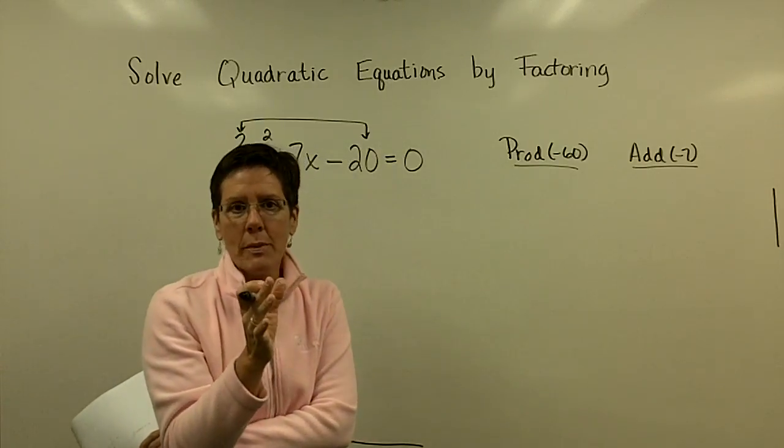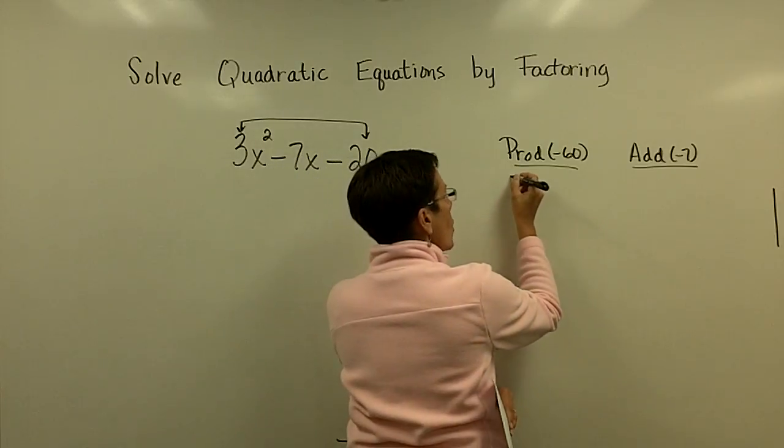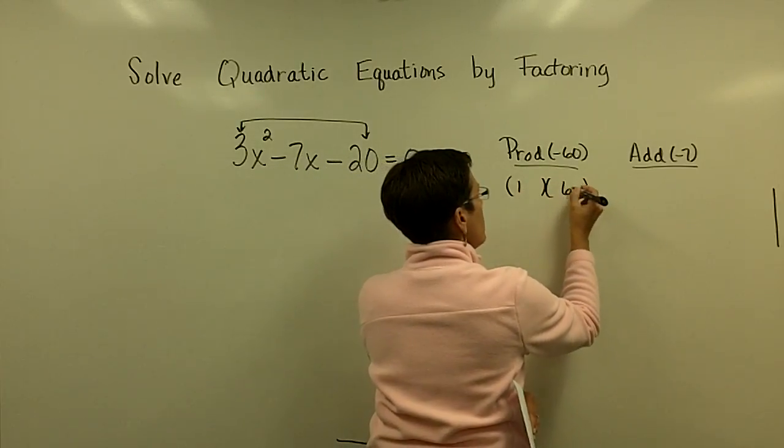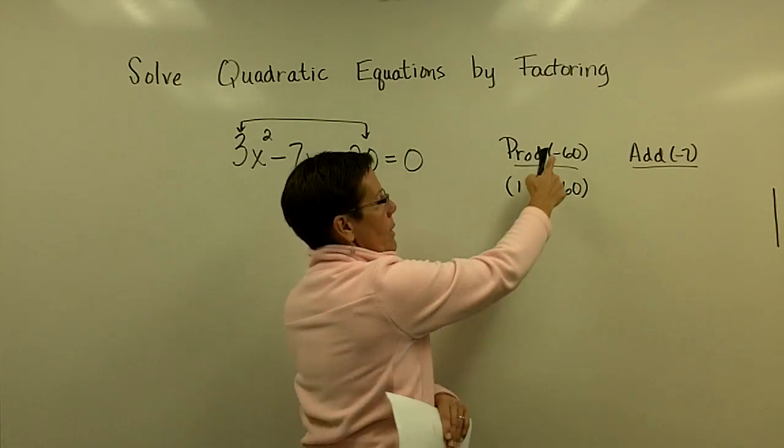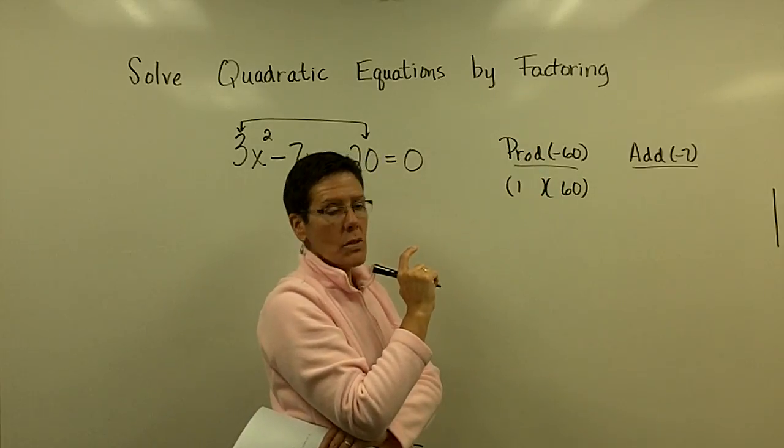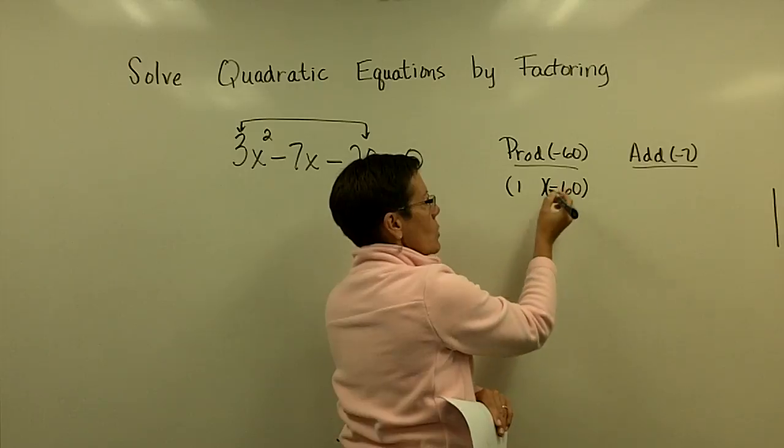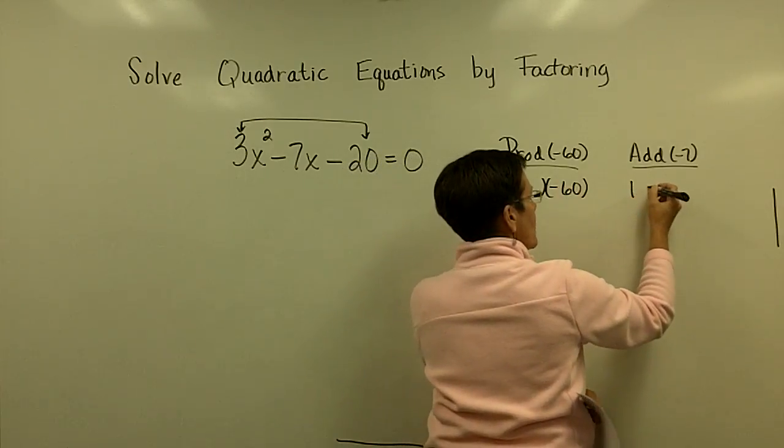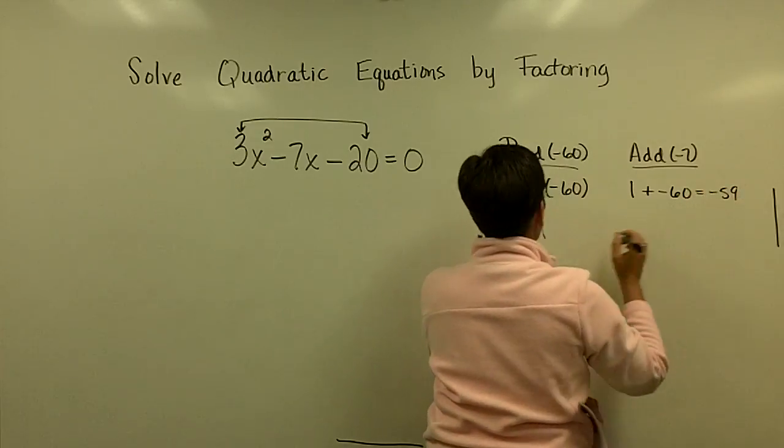If it doesn't come to me quickly or clearly, then I just go right away with using one times 60. For these two numbers to add to be a negative number but multiply to be a negative number as well, one of these two has to be negative. I'm going to make the bigger one negative so that when I add those, that gives me negative 59 and I want them to add to be negative 7. So that's not it.